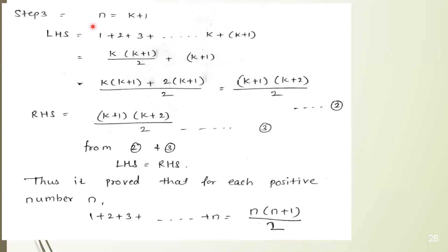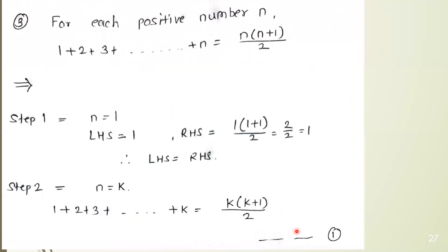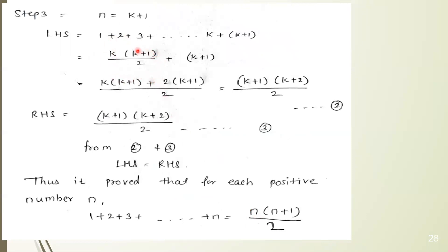After that, there is the induction step, where we prove for n equal to k plus 1. We solve the LHS and RHS separately. The LHS becomes: 1 plus 2 plus 3 plus dot dot dot plus k plus (k+1). Notice that 1 plus 2 plus 3 plus dot dot dot plus k can be replaced with k(k+1)/2 from equation 1. Substituting and adding (k+1), we get k(k+1)/2 plus (k+1), which simplifies to (k+1)(k+2)/2. This is equation 2.